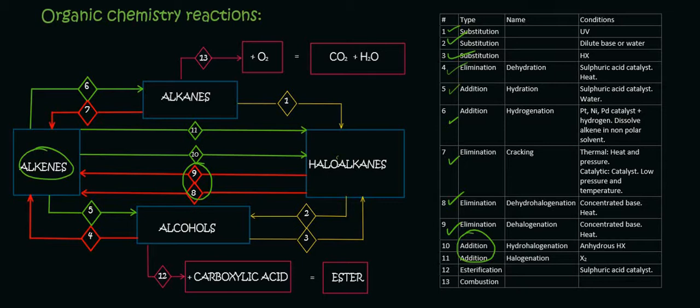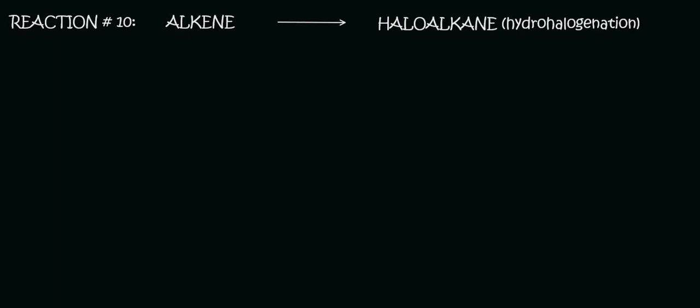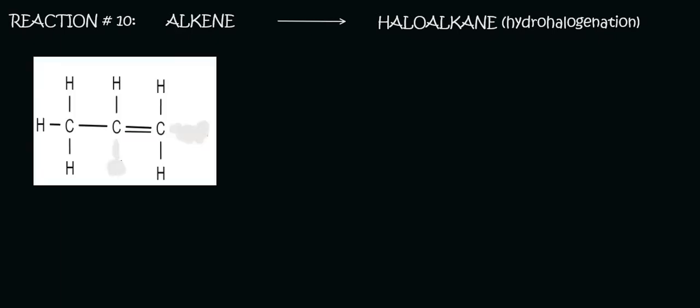So reaction number 10 is going to be hydrohalogenation. So we're going to add a hydrogen and a halogen. Let's have a look at how that's going to work. To start this reaction we're going to need an alkene. I want you to quickly try to figure this out. It's actually very easy. Here we have an alkene and we're trying to turn it into a haloalkane using a process called hydrohalogenation.